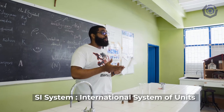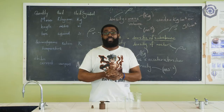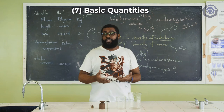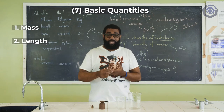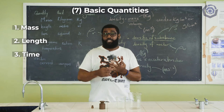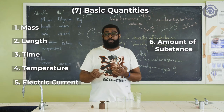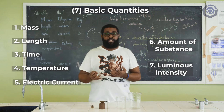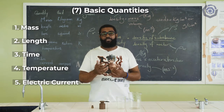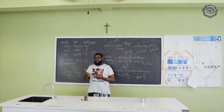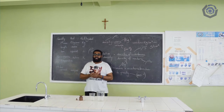The SI system, or International System of Units, was developed. There are seven basic or fundamental quantities: mass, length, time, temperature, electric current, amount of substance, and luminous intensity. However, for CSEC Physics, we only look at the first five. Let us look at those five quantities, their units, and their symbols.